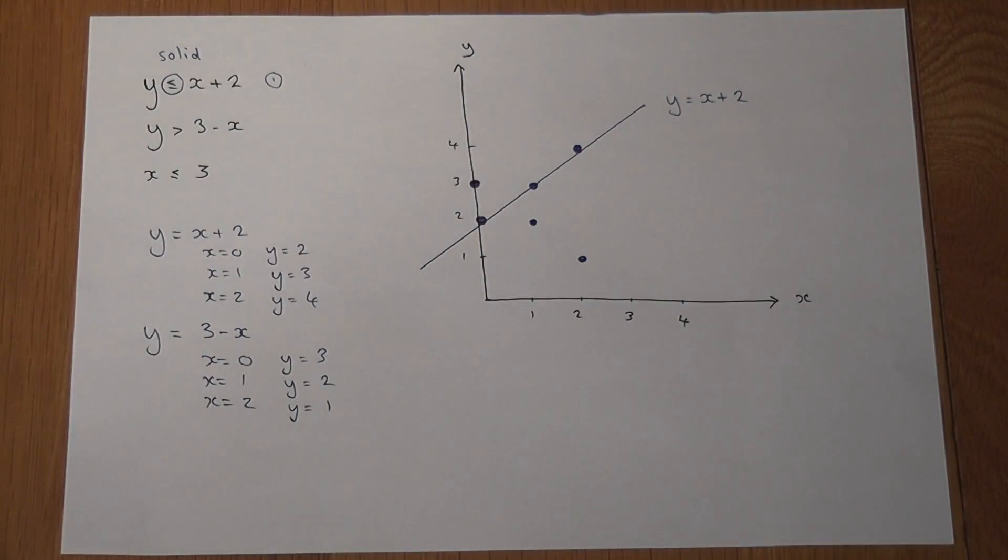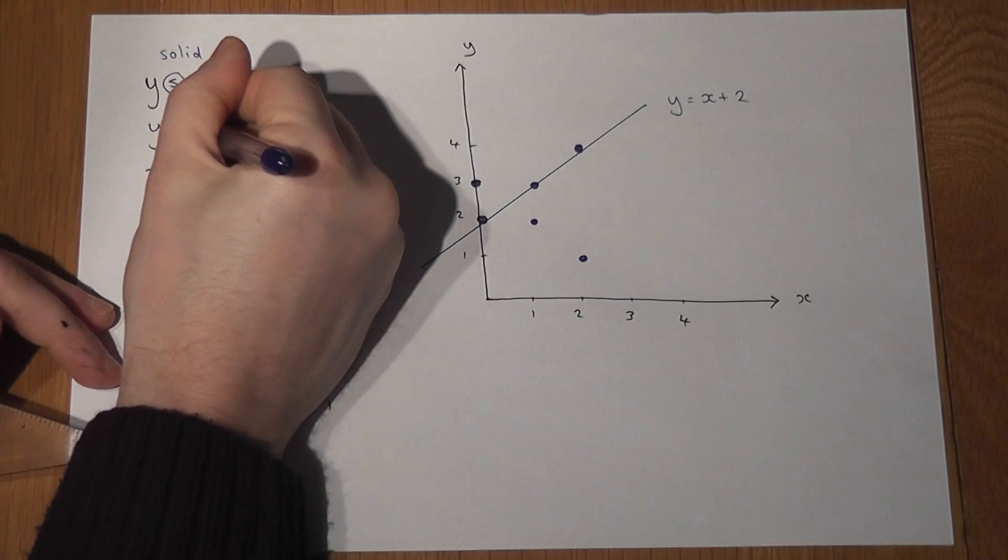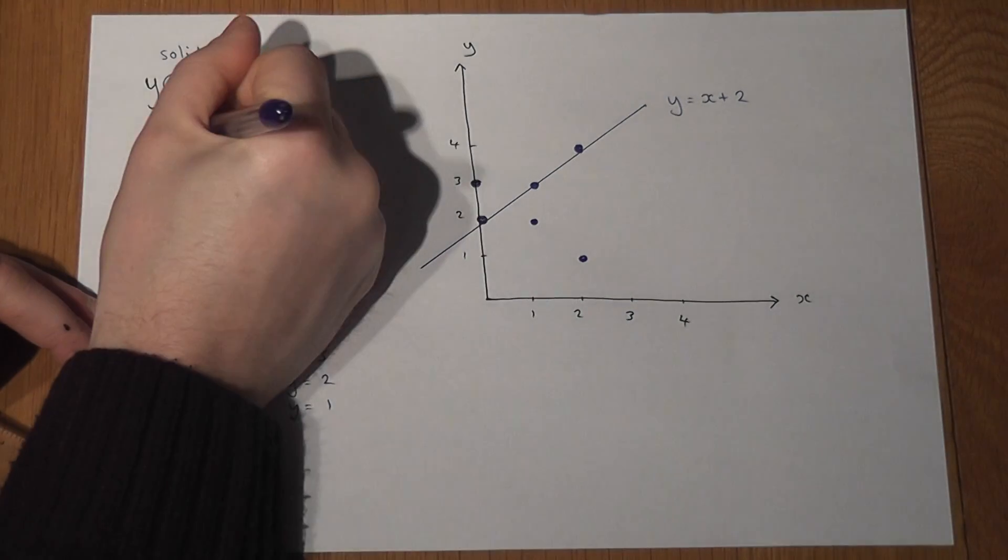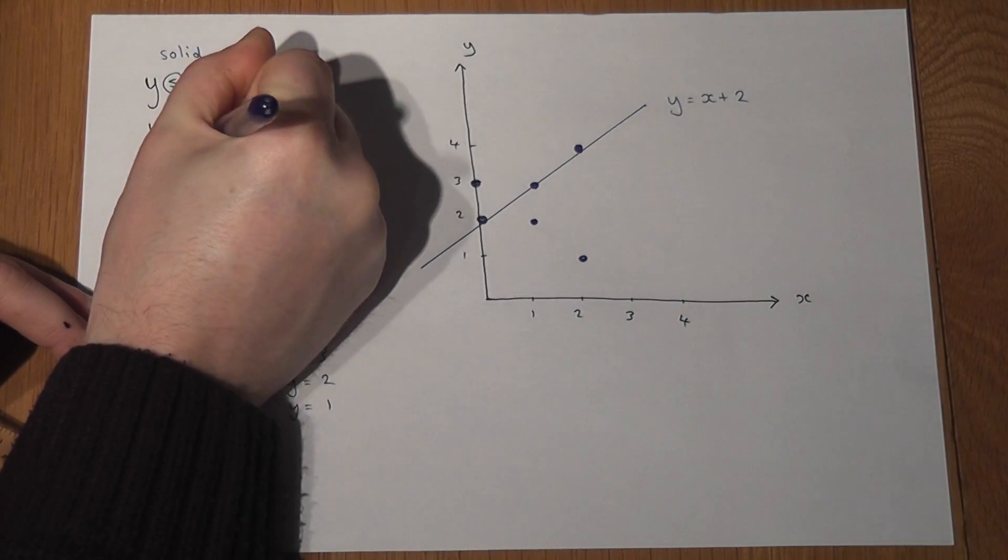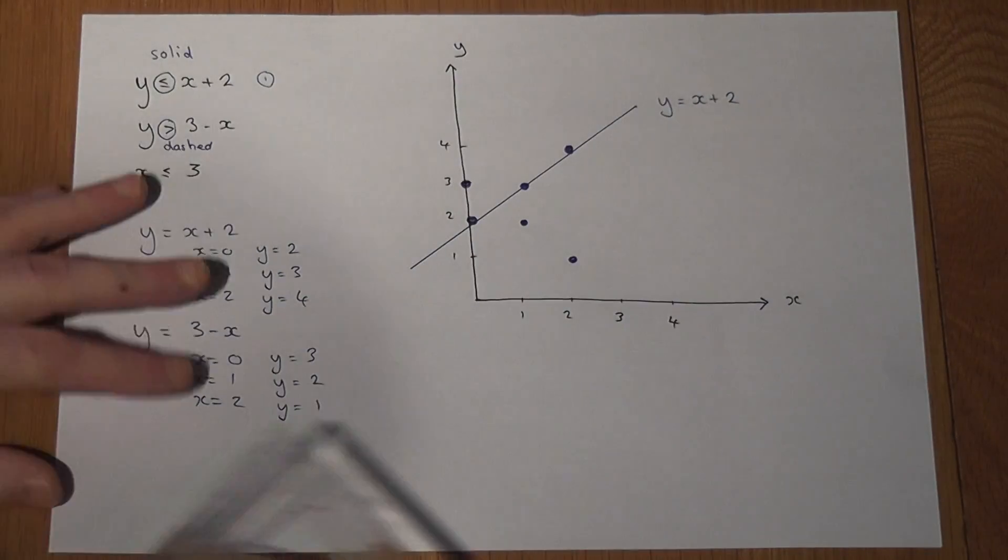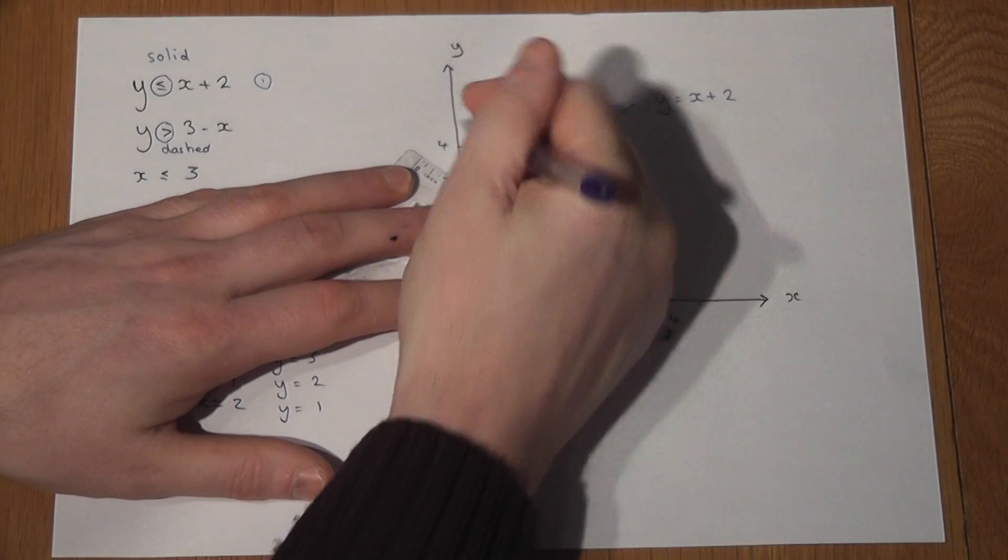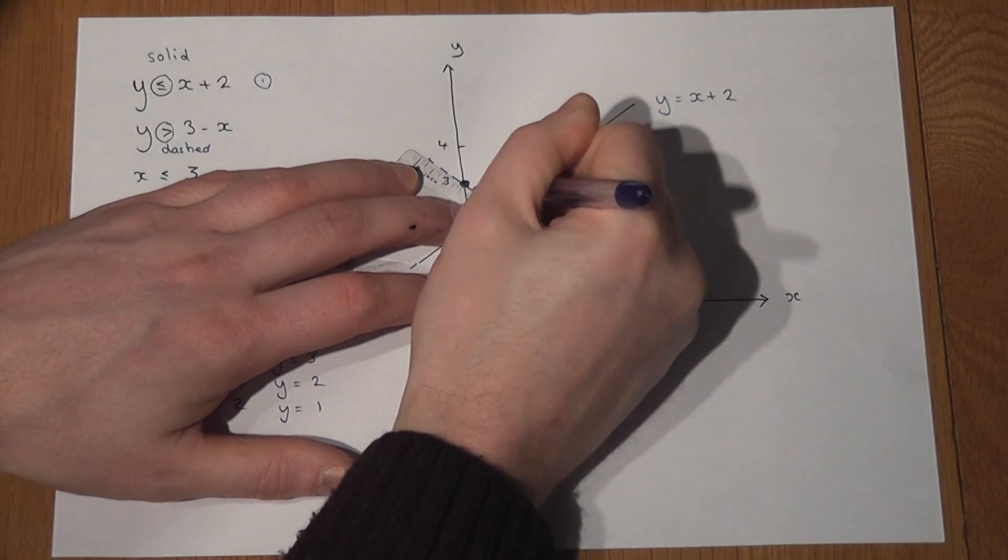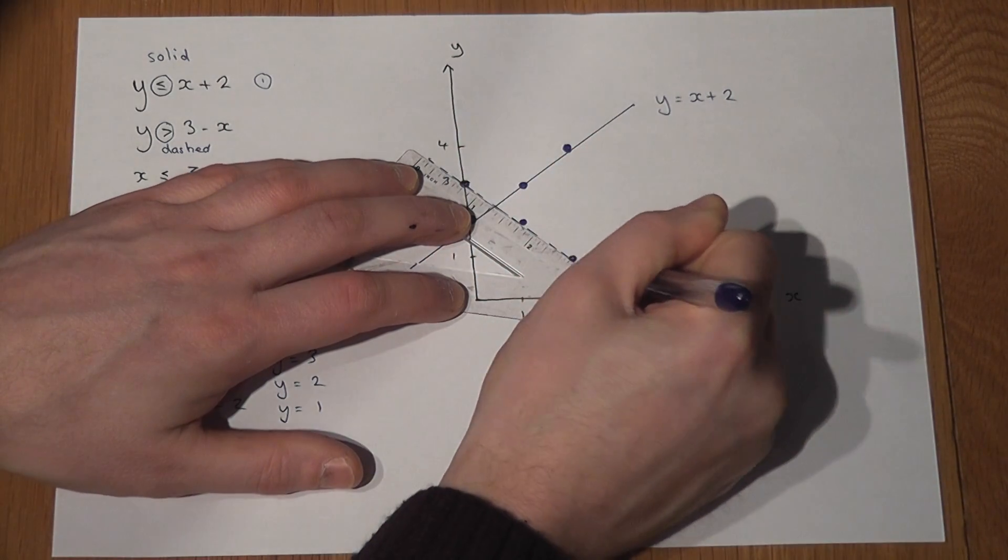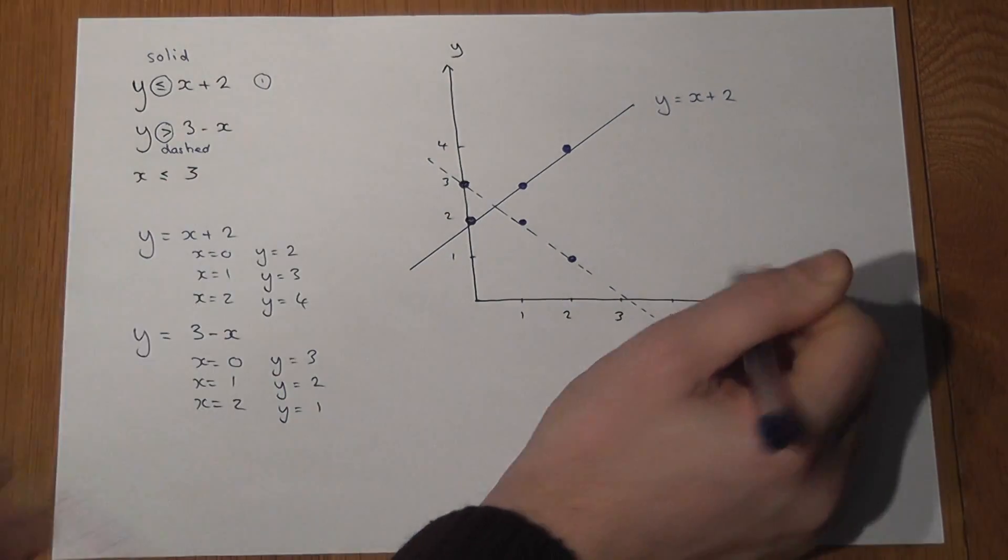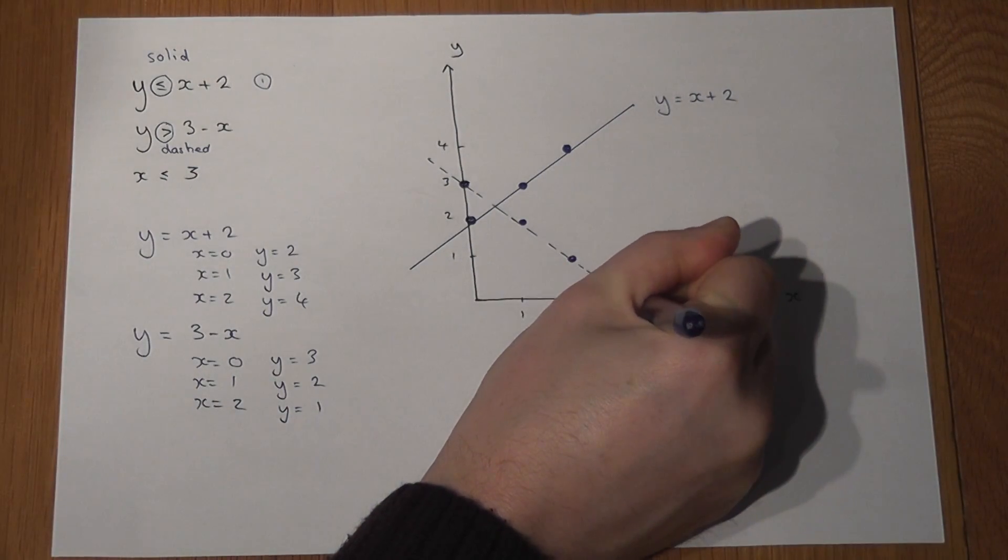So there are my coordinates. I can draw a line through, but again, if I've got a strict inequality I use dashed or dotted lines. So I can just draw my dashed or dotted line through these three coordinates, and that passes through 3 on the x axis.